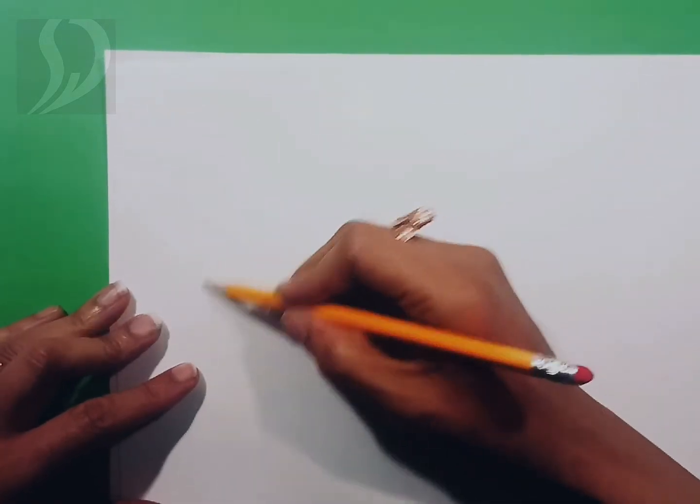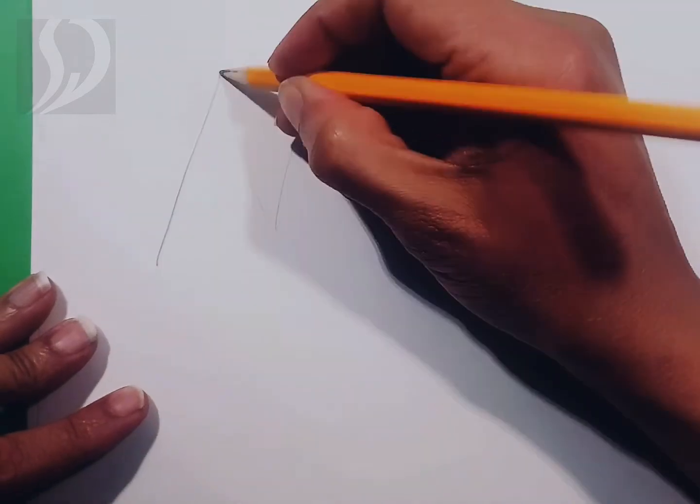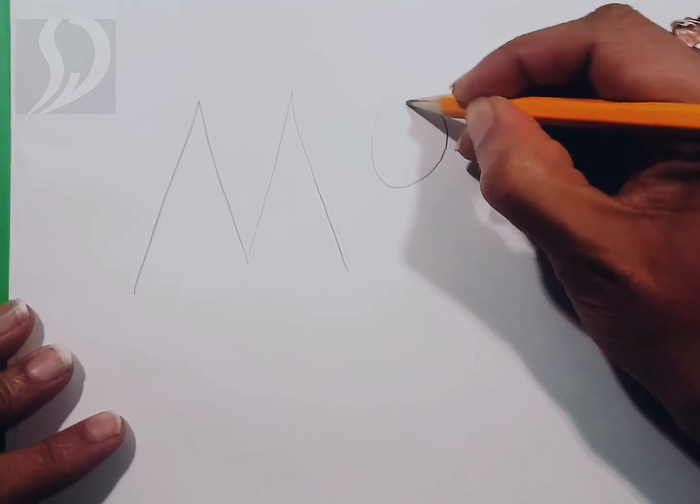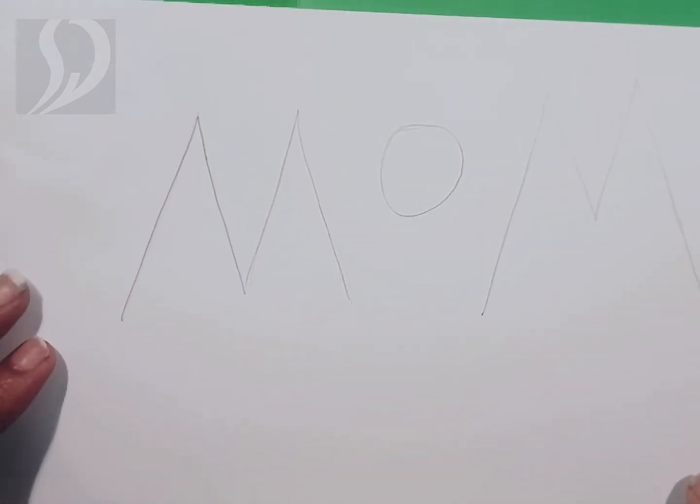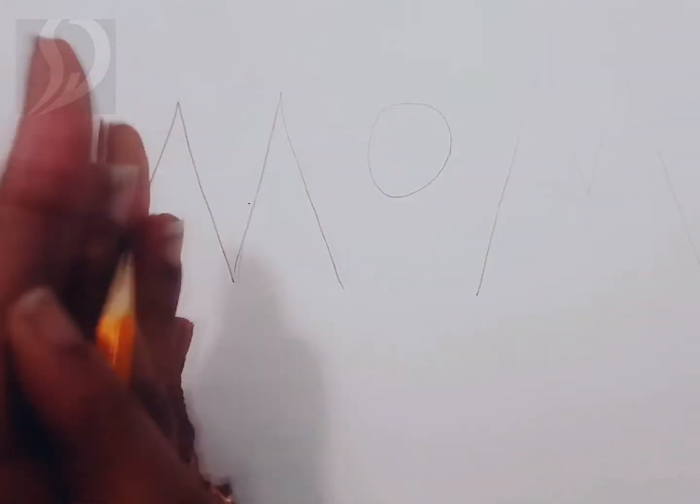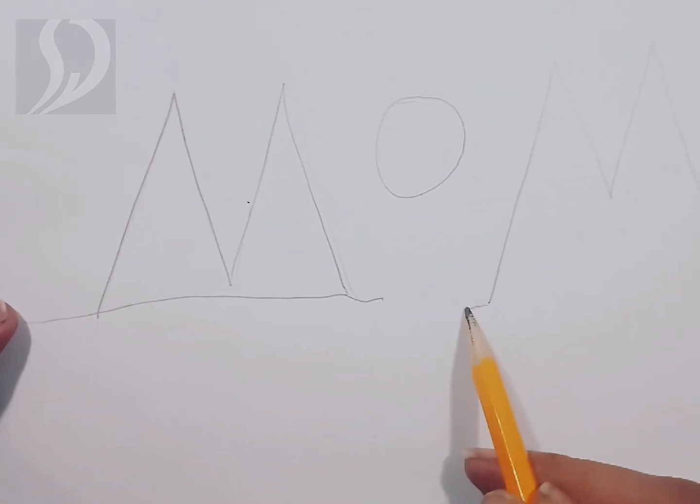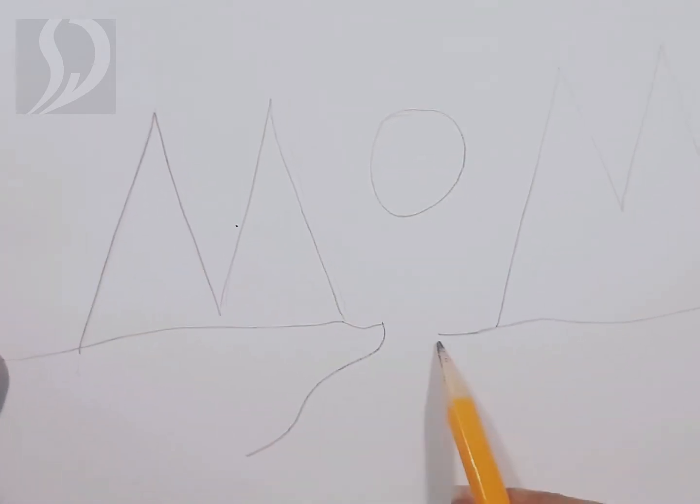We're going to start with the word mom. How do we spell mom? Let's go with M. Let's make that darker so you can see it. We're going to make a small circle in the middle and then we're going to write another M. This is how we spell mom. Thank you, mom. Now what we're going to do is put a nice line through here on both sides of our M and we're going to leave a space and make a curvy line.